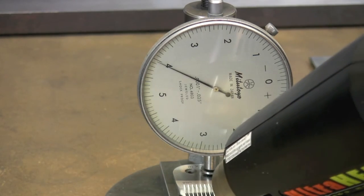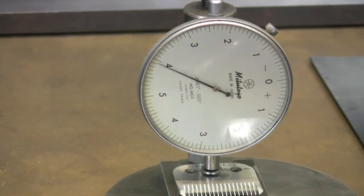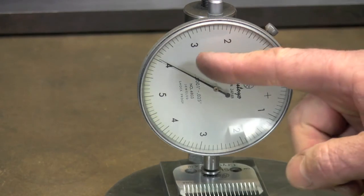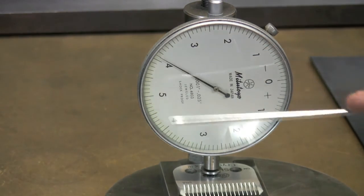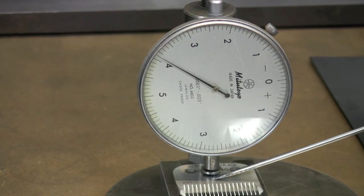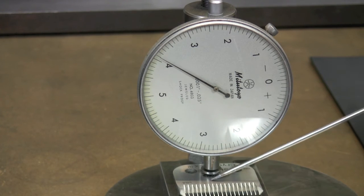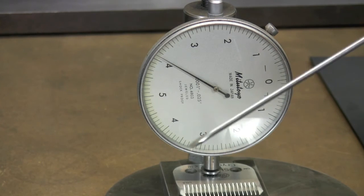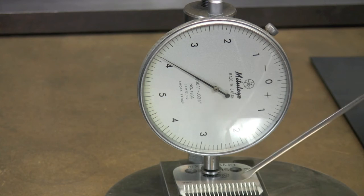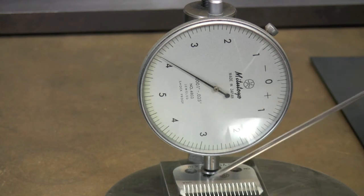You may notice the dial is moving counter-clockwise, which means the blade, the top of the blade is going away from the indicator, going down, which means the bottom of the blade is going down also, in the center, more than the edges.